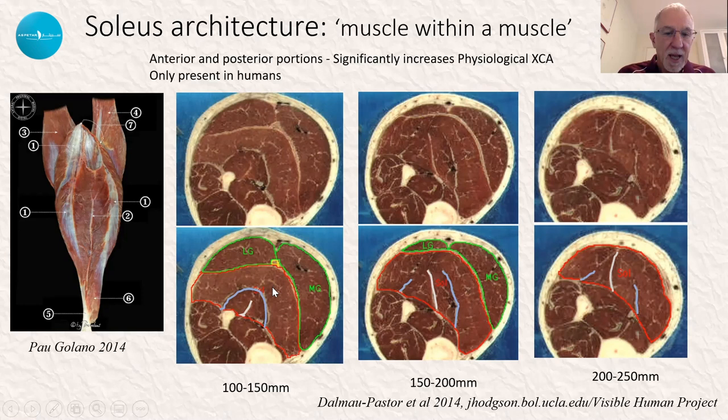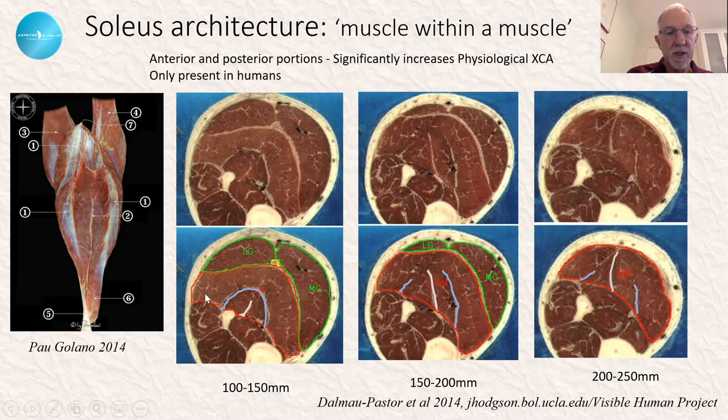We've got a bipennate anterior portion, which is often described as a muscle within a muscle. We see this anteriorly from this beautiful dissection by Pao Galano. The rest of the muscle is unipennate, whereby the fibres travel from the anterior aponeurosis back to the posterior aponeurosis.